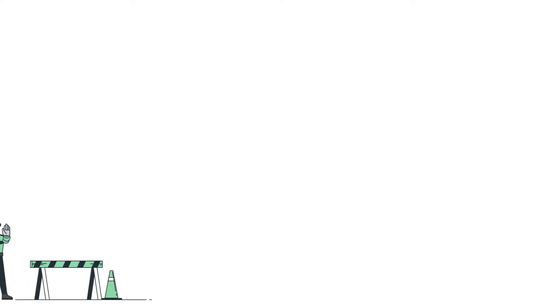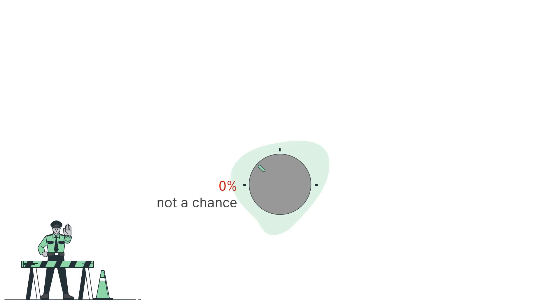But first, a word on how not to think about probabilities. By default, most people treat probability as a dial with just three settings: 0%? Not a chance. 100%? A sure thing. And 50-50? A complete toss-up.